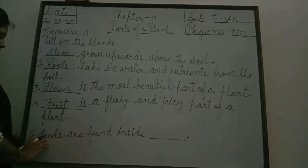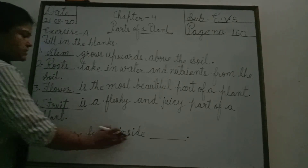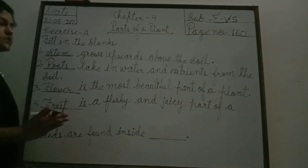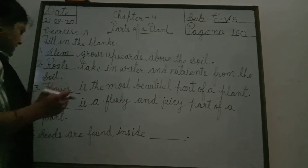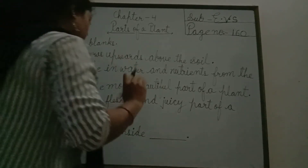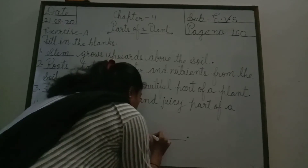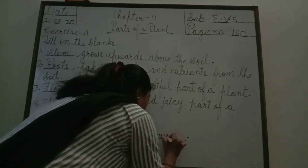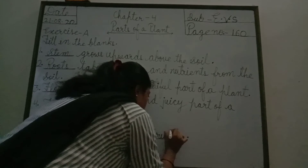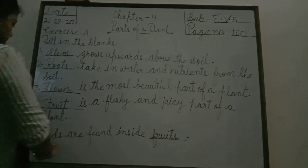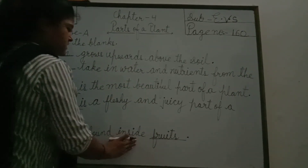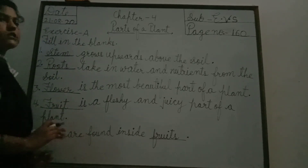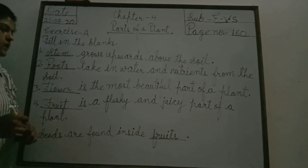Question number 5 is: seeds are found inside dash. Seeds kahan per paaye jaate hain? The answer is fruits. The spelling is F-R-U-I-T-S. Seeds are found inside fruits. Seeds fruits ke andar paaye jaate hain.